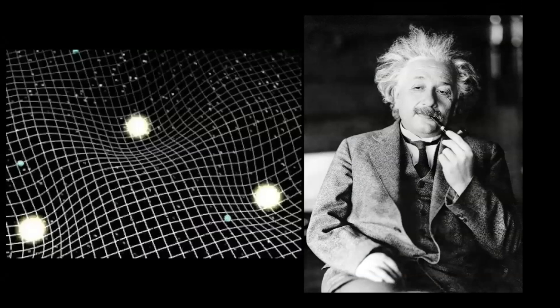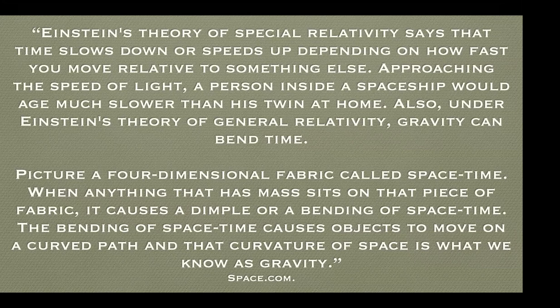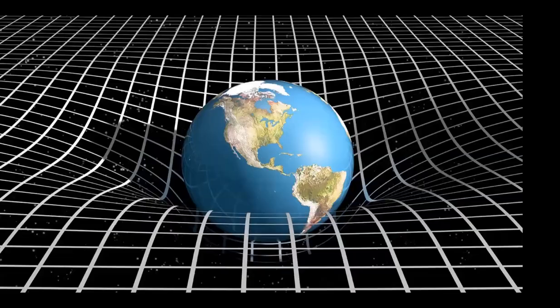Albert Einstein's experimental imaginings of time's effect on three-dimensional space led to the idea — confirmed later — that gravity bends space and slows or speeds up time. It literally bends space and slows or speeds up time. Einstein's theory of special relativity says that time slows down or speeds up depending on how fast you move relative to something else. Approaching the speed of light, a person inside a spaceship would age much slower than his twin at home.